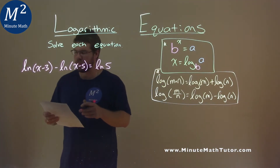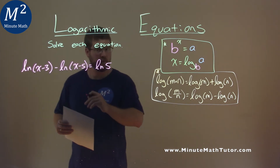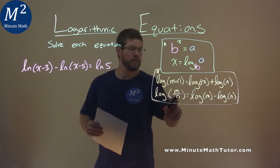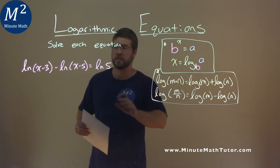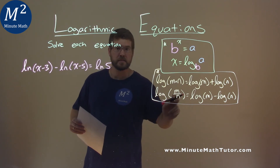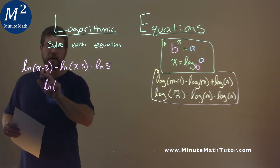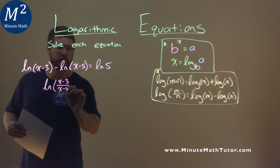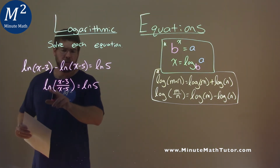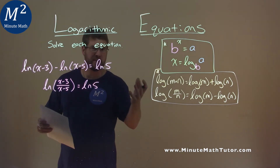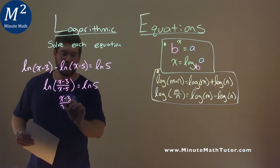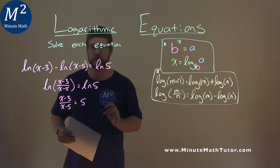We're given this problem: the natural log of x minus 3 minus natural log of x minus 5 is equal to natural log of 5, and we have to solve this equation. We have our second part — we're subtracting two logs with the same base. A natural log is log base e. We can combine that to be one logarithm and divide the insides. So: natural log of x minus 3 over x minus 5, equal to natural log of 5. Now we have natural log on both sides equal to each other, so we set the insides equal: x minus 3 over x minus 5 equals 5.